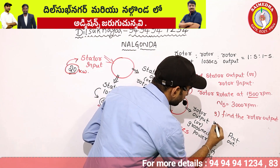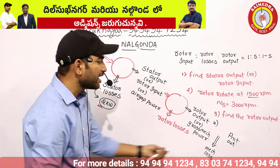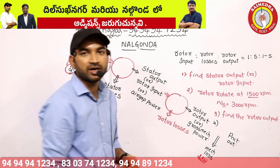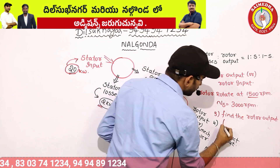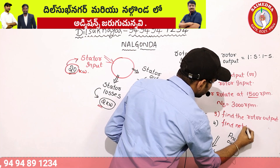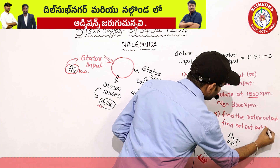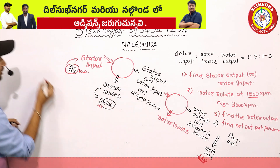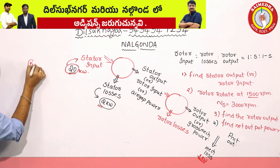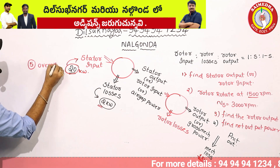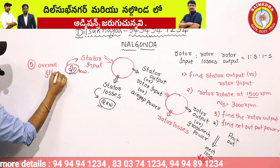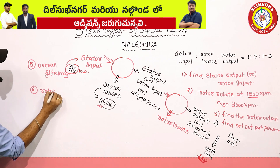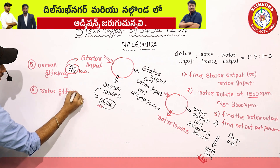Fourth question: mechanical losses are 1 kilowatt. Find the net output power. Fifth question: find the overall efficiency. Sixth question: find the rotor efficiency. Solve all four questions using the power flow relations derived above.